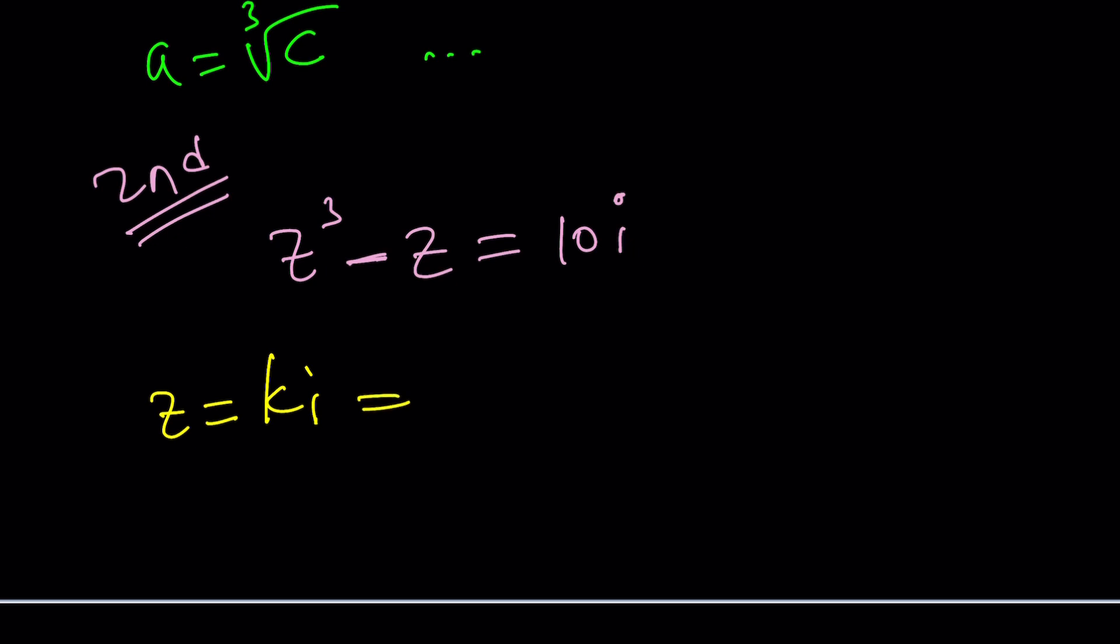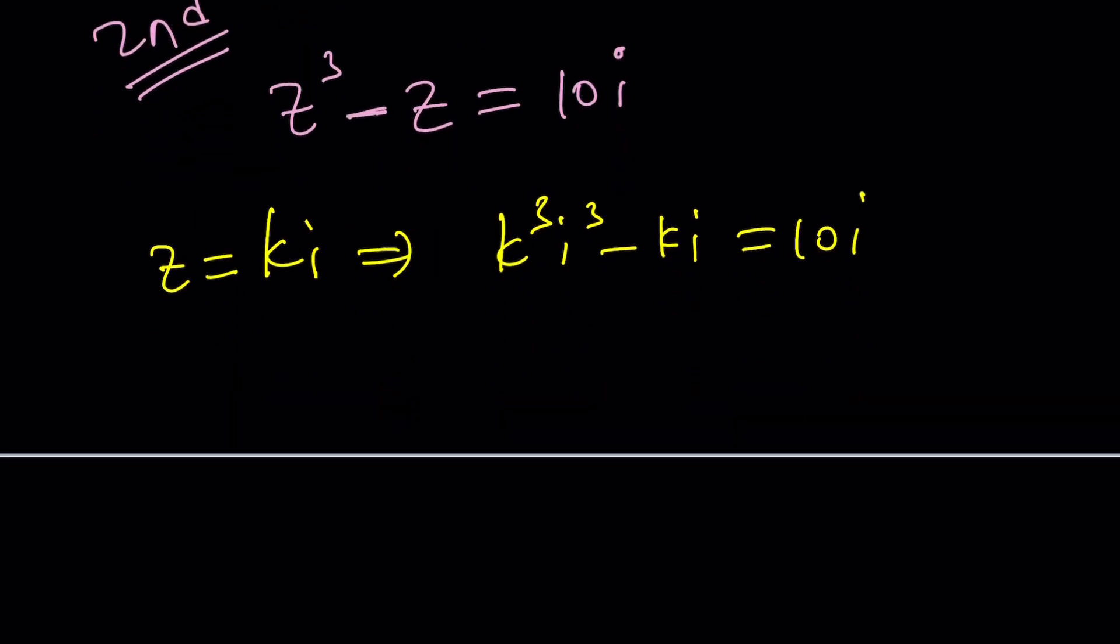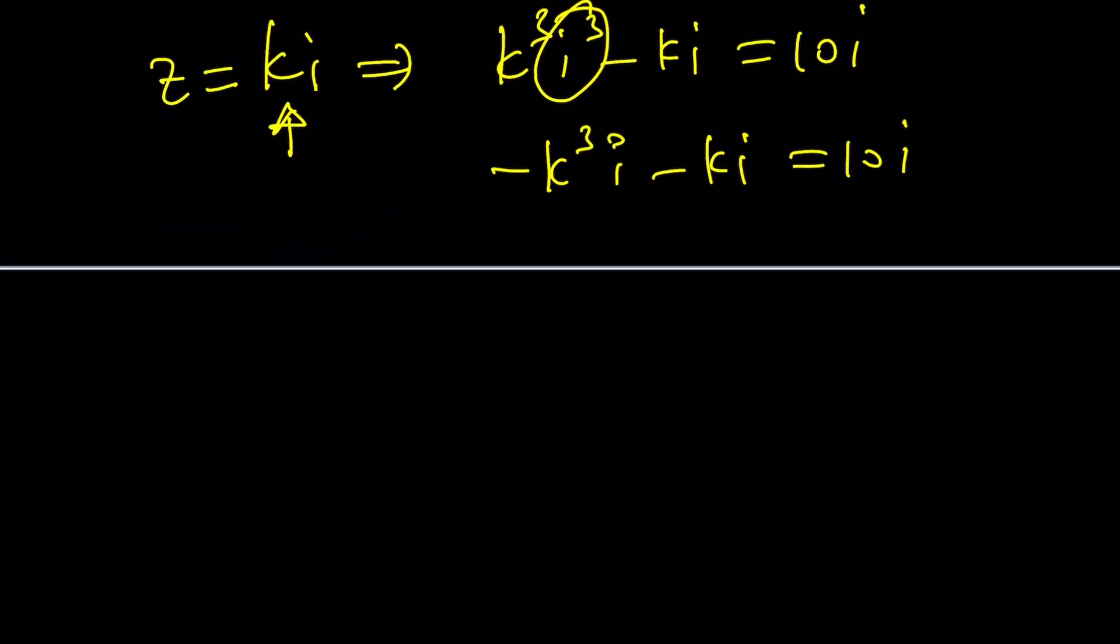And that implies k³i³ - ki = 10i. In this case, k is going to be real, by the way, so that this becomes imaginary. So let's go ahead and simplify i³. That's -i, -k³ - k. I mean, -k³i, that's what I meant. -k³i - ki = 10i. And from here, if we factor out i, we're going to get -k³ - k = 10i.